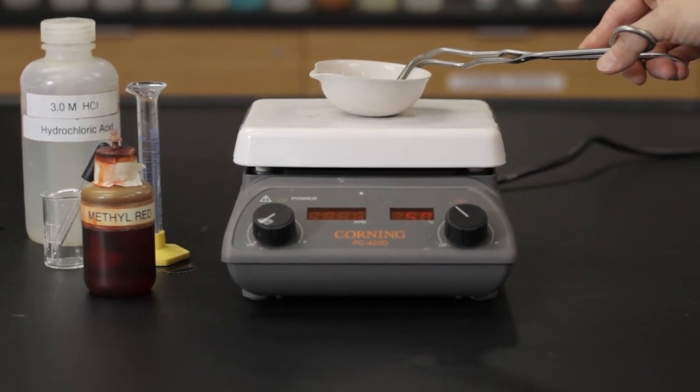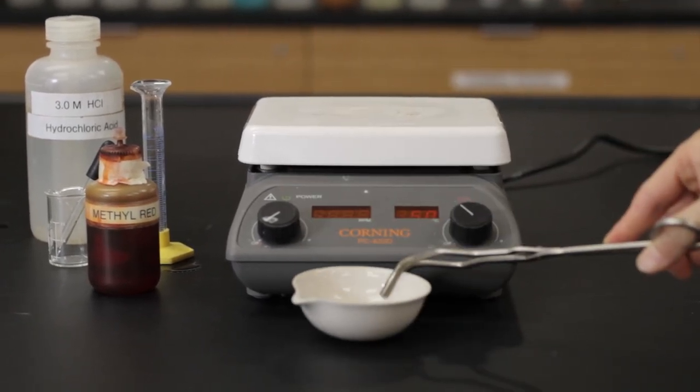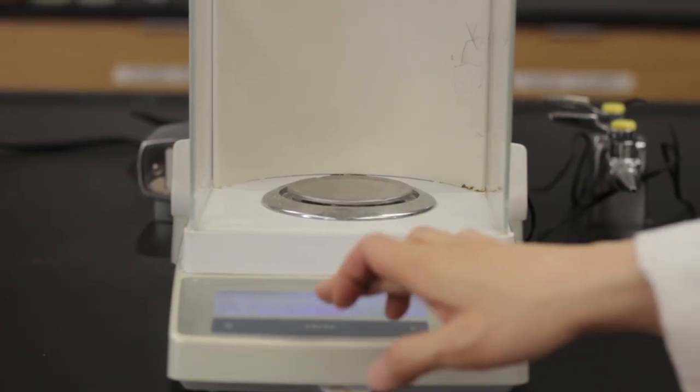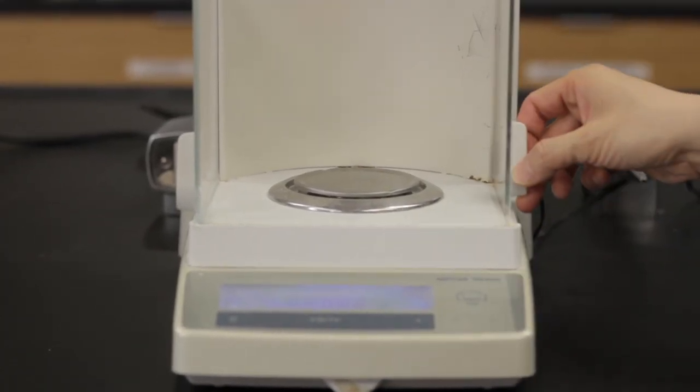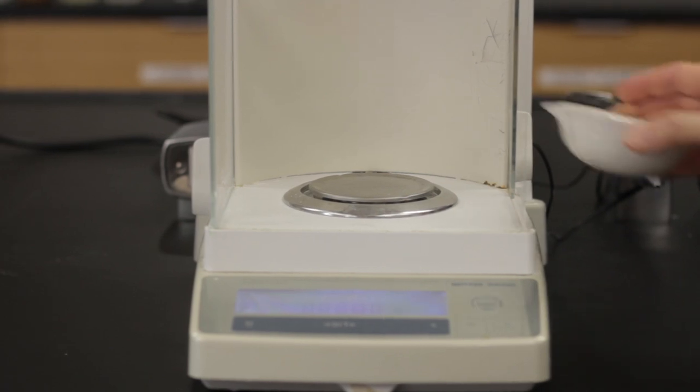Remove the evaporating dish off the hot plate using crucible tongs and allow it to cool to room temperature. Reheat the evaporating dish and record the exact mass.